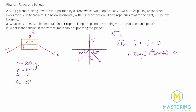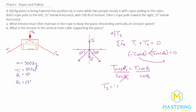We want to solve this for T2. Adding the T1 term to the other side gives T2 cosine of theta 2 equals T1 cosine of theta 1. Dividing both sides by cosine of theta 2 isolates T2, so T2 equals T1 cosine of theta 1 divided by cosine of theta 2. Plugging in, that's T1 cosine of 15 degrees divided by cosine of 25 degrees.